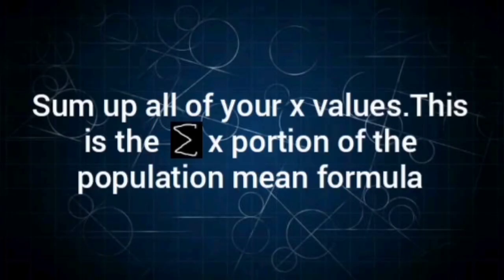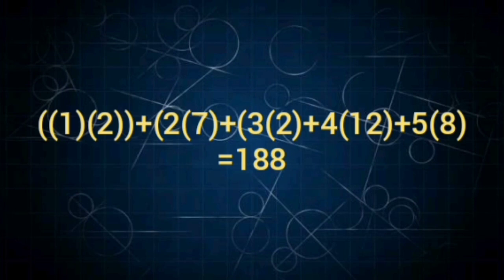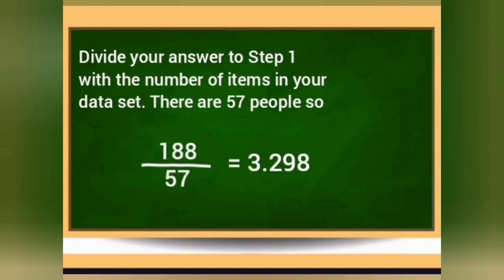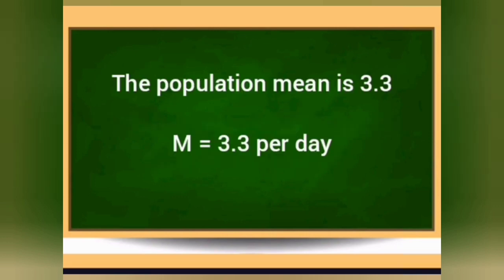Step number 1: Sum up all of your X values. This is the X portion of the population mean formula. Step number 2: Divide your answer from step 1 by the number of items in your dataset. There are 57 people, giving an average of 3.3 meals per person per day. So the population mean is 3.3.